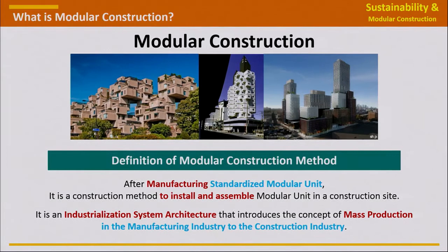Next, the definition of a modular construction method — this is my own definition. After manufacturing standardized modular units, it is a construction method to install and assemble modular units at a construction site. It is an industrialization system architecture that introduces the concept of mass production from the manufacturing industry to the construction industry. The key terms are: manufacturing, installation, assembly, industrialization system, architecture, and mass production.